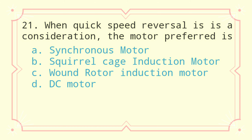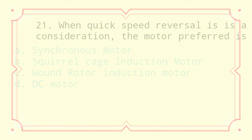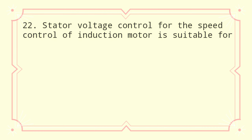Question 21: When quick speed reversal is a consideration, the motor preferred is: a) synchronous motor, b) squirrel cage induction motor, c) wound rotor induction motor, d) DC motor. The correct answer is DC motor.